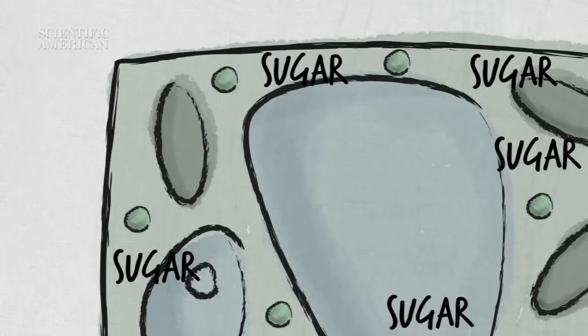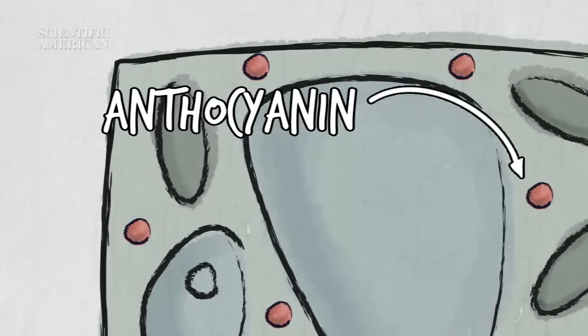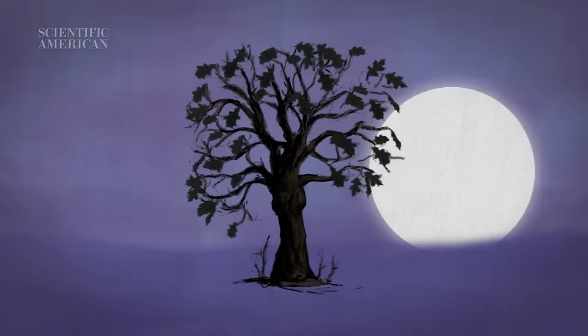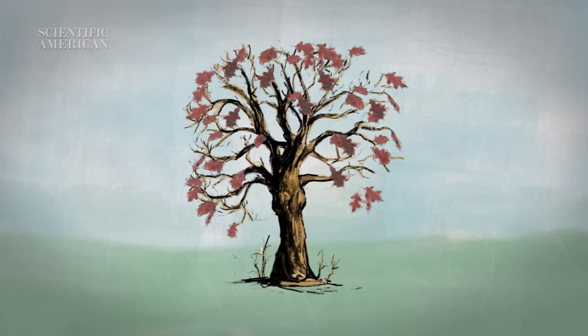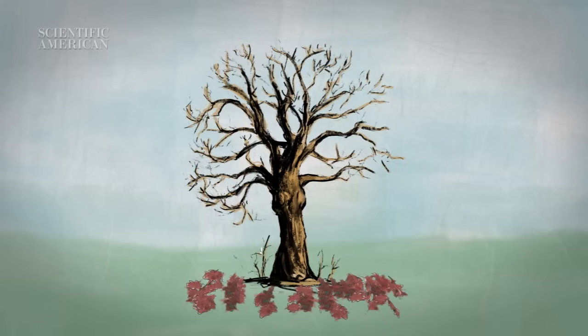But what about the red colors? They actually form during the fall. As veins close, sugars get trapped in the leaf and react with other chemicals to form red pigments. Intensity is connected to temperature — if days are bright and nights are cold, more sugars get trapped and the reds intensify.